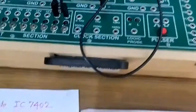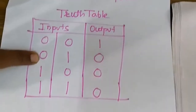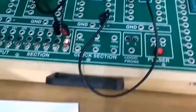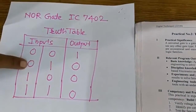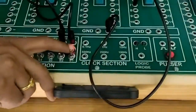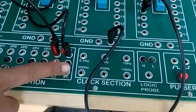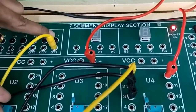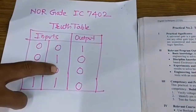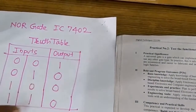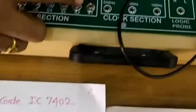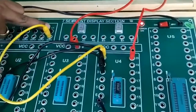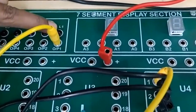For the second row: first input is 0 and second input is 1 — output is 0, confirmed by the LED being off. For the third combination: first input is 1 and second input is 0 — output is again 0. Finally, when both inputs are made 1, the LED remains off, giving logic 0 at output. This verifies the complete working of the NOR gate.